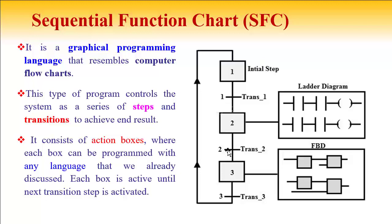The SFC starts from an initial step and ends, then loops again. Between start and end, different steps and transitions are present. The first block is the initial step, followed by Step 2 and Step 3, with transitions between each. These steps can be thought of as sub-programs, and each sub-program can be written in different languages — for example, Step 2 in Ladder Diagram and Step 3 in Function Block Diagram.